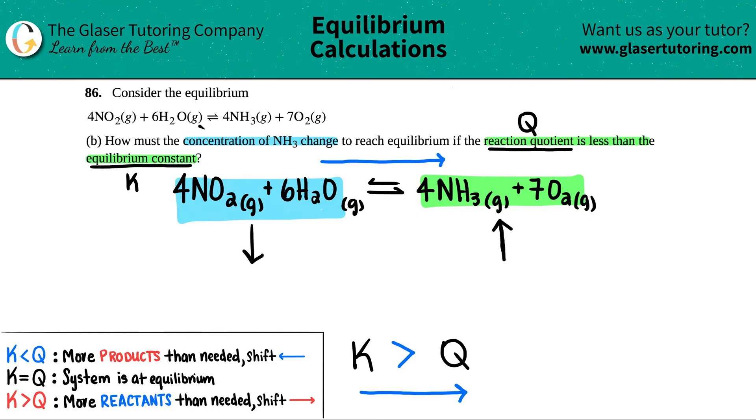So it says, how must the concentration of NH3 change? They're basically asking for, is it going to decrease or is it going to increase? Well, here's the NH3. Since we're going in the forward direction, the concentration of NH3 has to increase. I'm just going to put the up arrow for increase. And that's how it has to change. So there has to be some gain in that concentration of NH3.